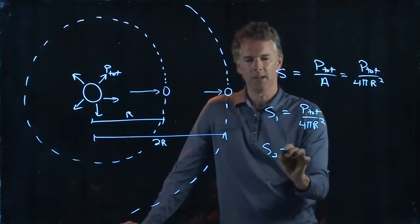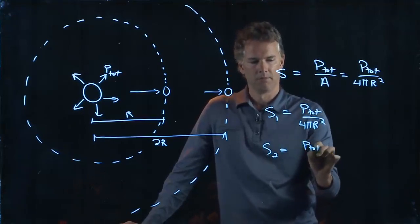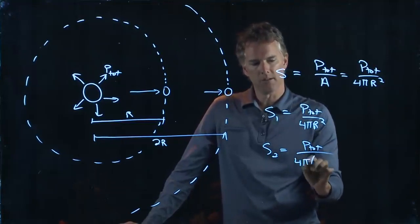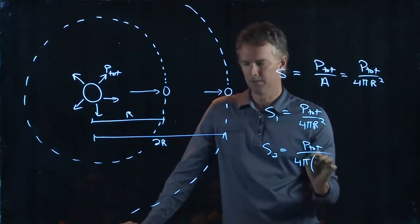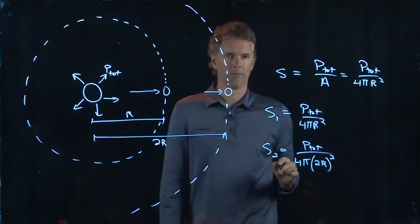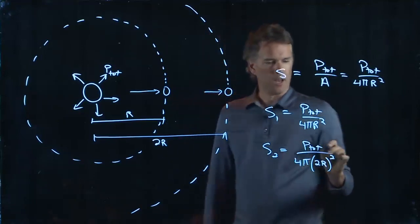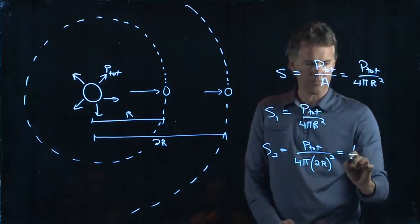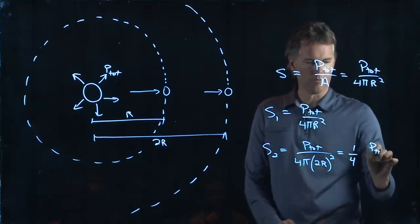But in the second case, the power doesn't change. But what does change is this radius down here becomes 2R quantity squared. And now I have a 1 over 2 squared, and that's the same as 1 over 4 of what we had before.